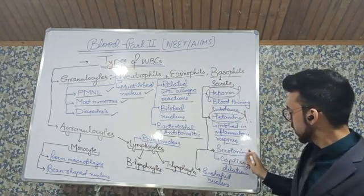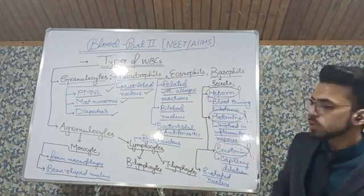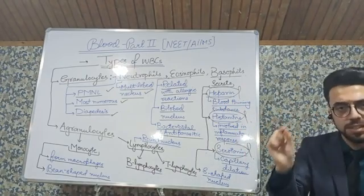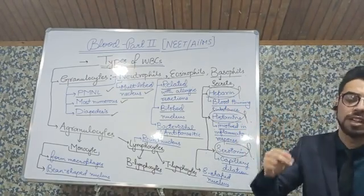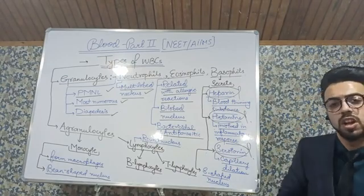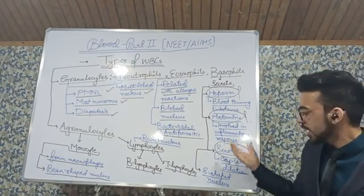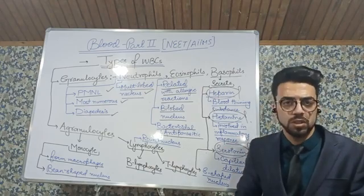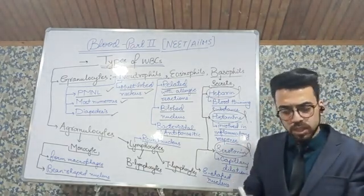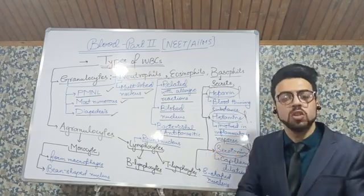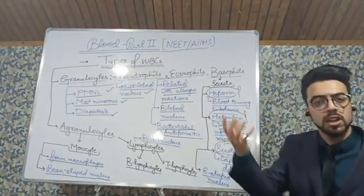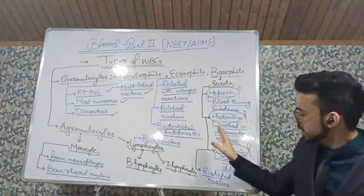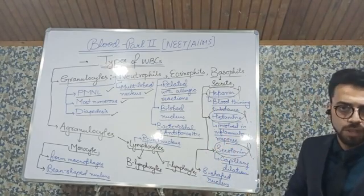The third substance produced by basophil is serotonin. Serotonin helps in capillary dilation — the blood capillaries need to be dilated and expanded so as to allow the movement of WBC cells very efficiently and smoothly.